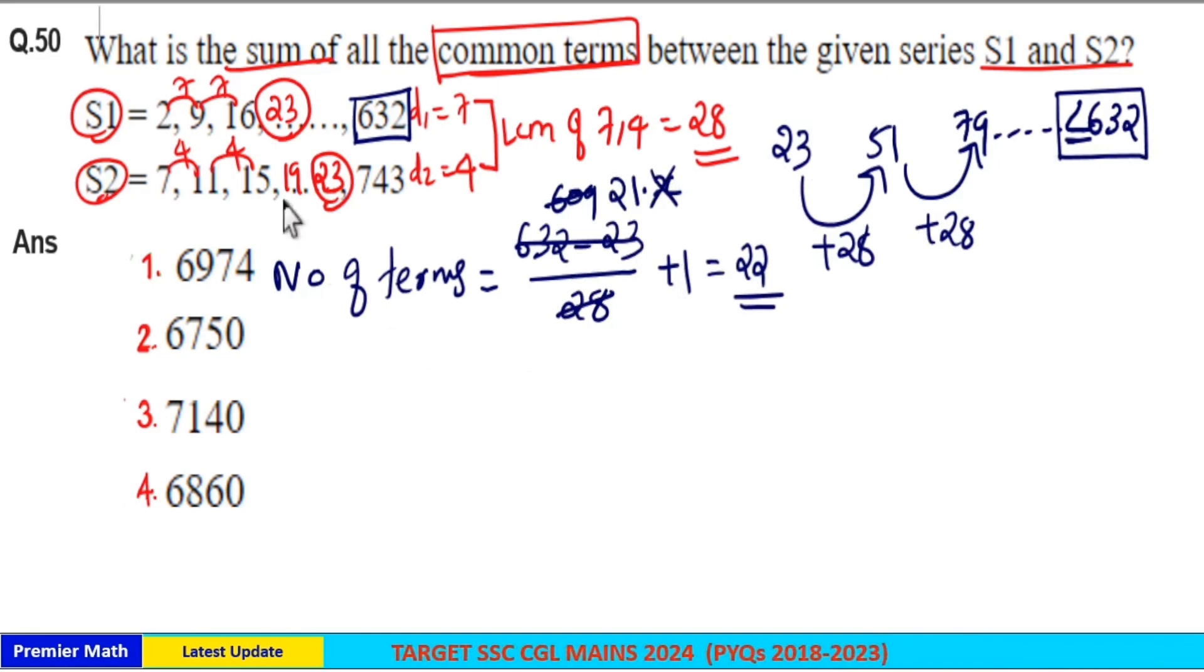Now find the sum of these 22 terms. Either you can use the formula or you can directly find this sum from this common term series. If you are using the formula, the formula is n by 2 into 2a plus n minus 1 into d.